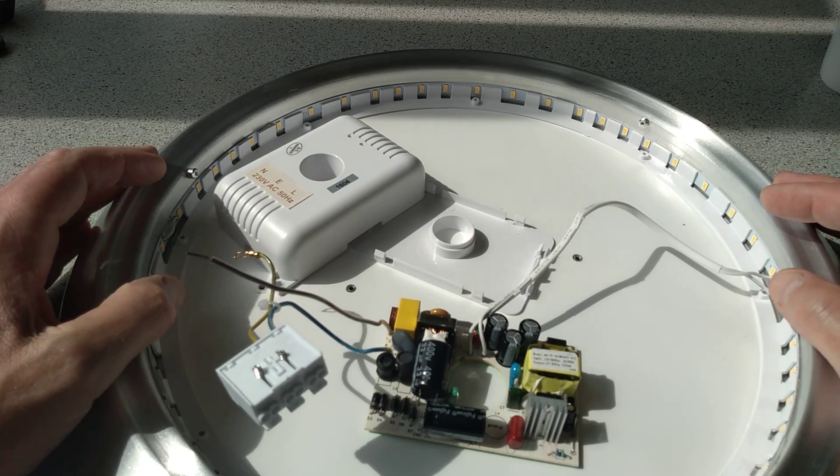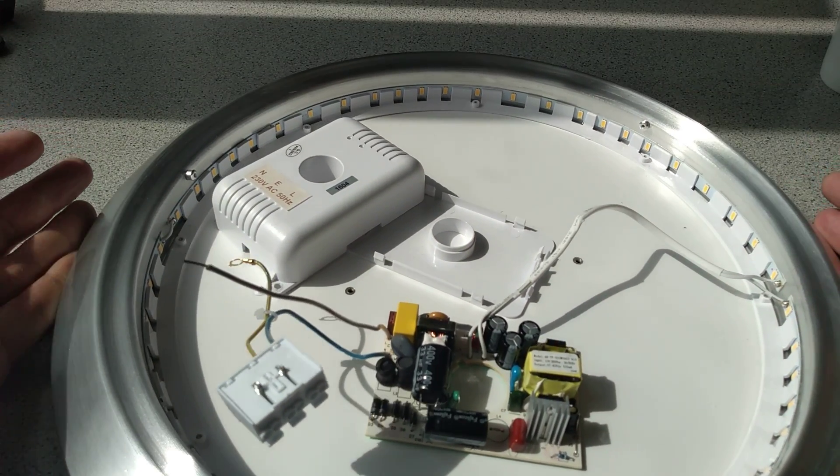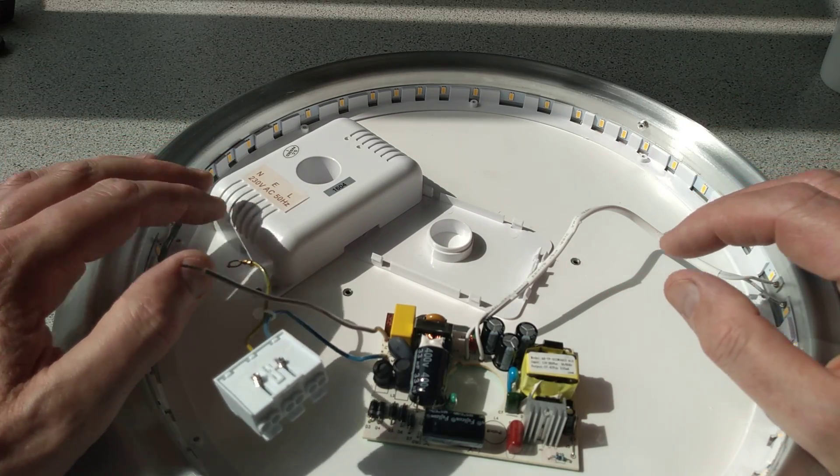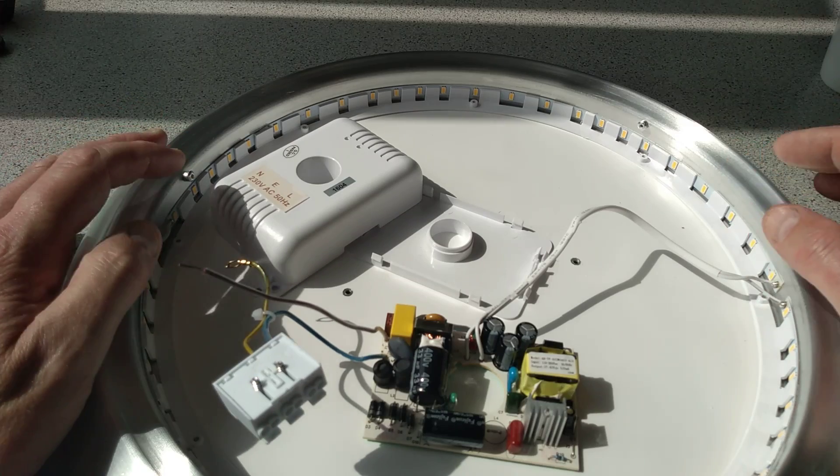And what happened is this: I was showing my colleague how these are just a disposable light fitting because this one was dipping out every so often. Every so often while you were in the room it would just flick out and come on again which was quite annoying.